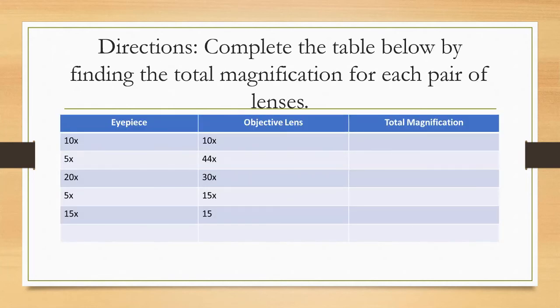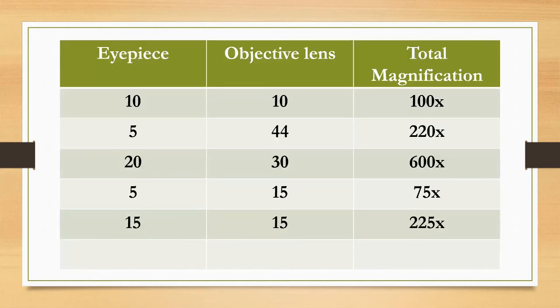Let's have an activity. Complete the table below by finding the total magnification for each pair of lenses. To get the total magnification power of the microscope, we multiply the magnification of the eyepiece and the objective lens.